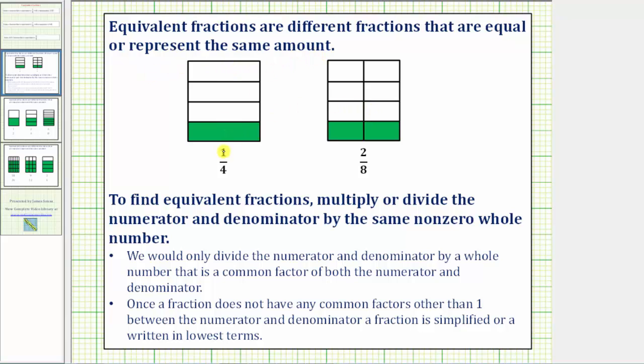Looking at the two models here, 1/4 is equivalent to 2/8, where here we have one piece or one part equal to 1/4, and here we have two pieces or two parts where each part is equal to 1/8. But in both models, the same amount is shaded, so because we have different fractions equal to the same amount, these are equivalent fractions.